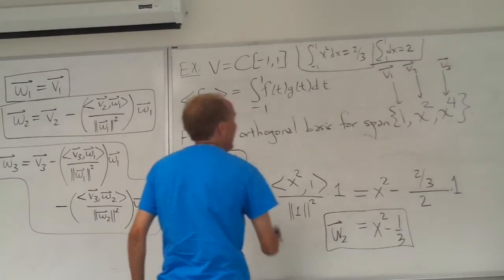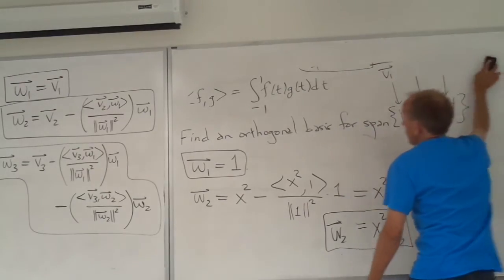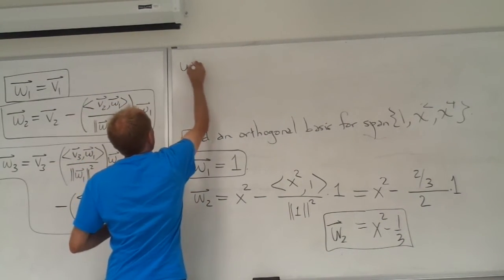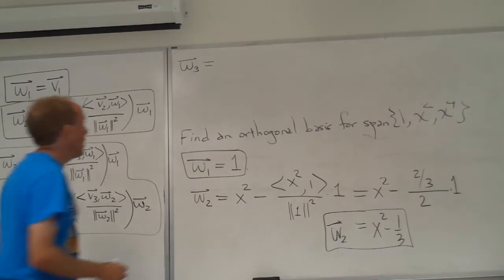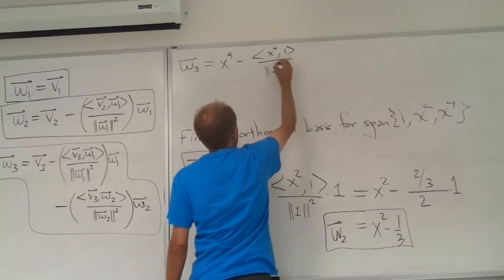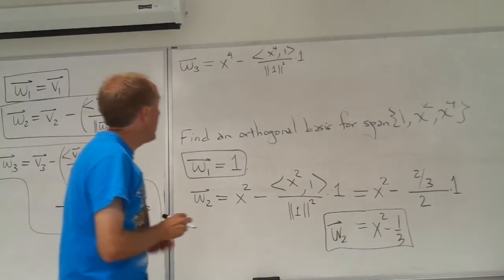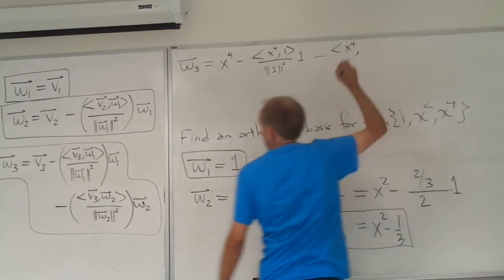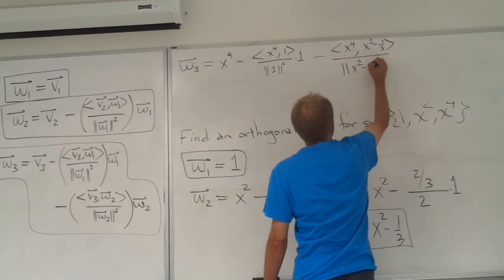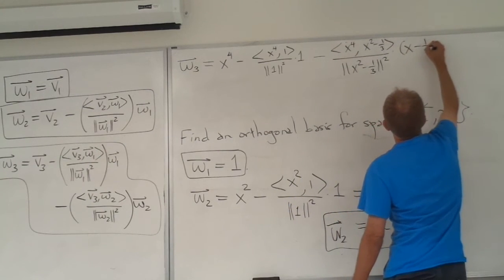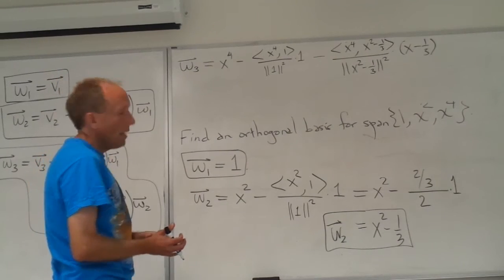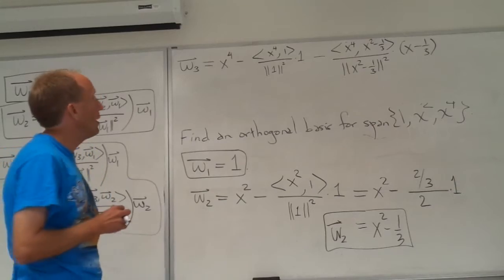Now we have to come up with w3. For the third vector w3, we take v3, which is x⁴, and we subtract the inner product of x⁴ with w1 over the norm squared of w1, times 1. And then we have to subtract the inner product of v3 with w2 — we put x² − 1/3 in there — over the norm squared of x² − 1/3, and then multiply all of that by x² − 1/3. I am simply writing down what this formula says in this example.